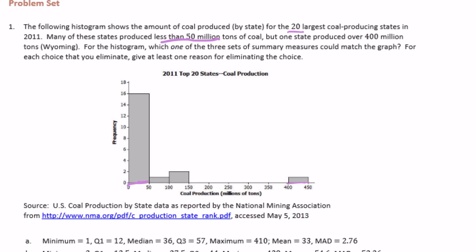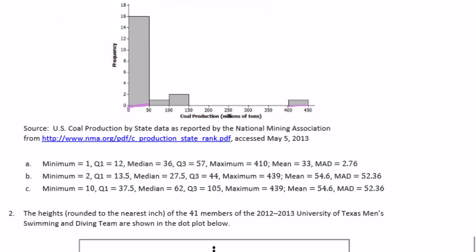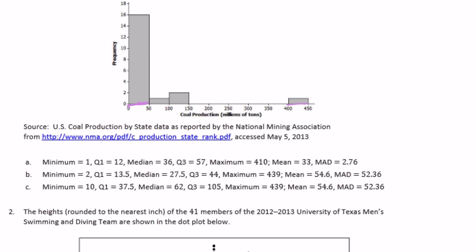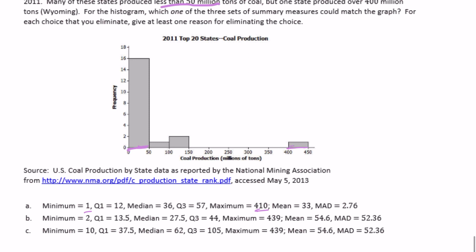Which one of the three sets of summary measures could match the graph? For each choice that you eliminate, give at least one reason for eliminating the choice. Let's start with A. The minimum is 1, which could be possible. The maximum is 410, also could be possible. Quartile one is at 12. There are only four out of the 20 data points greater than 50, so there are 16 data points out of the 20 that are produced less than 50 million tons of coal.